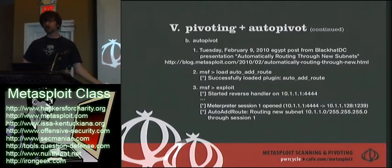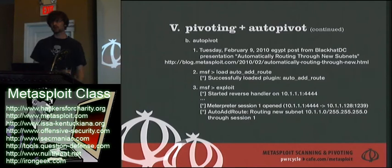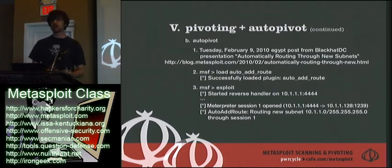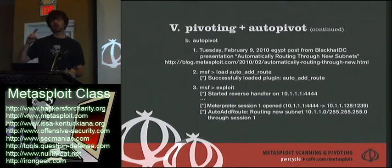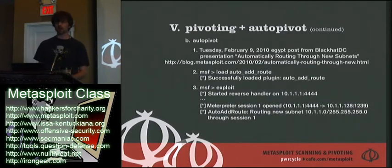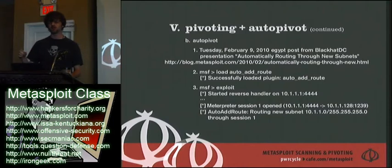If you have 25 machines on 25 different IP addresses, you could cycle through all of them — automatically scanning, automatically pwning, automatically adding the route, and then having more IP addresses to scan again. It becomes a very simple, dumb loop where you don't even have to know the IP addresses. You just have to start it off and get lucky with one.